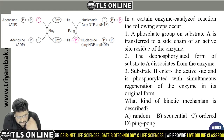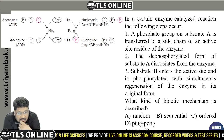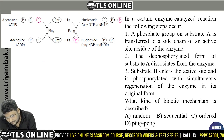Look at this question: in a certain enzyme-catalyzed reaction, the following steps occur — a phosphate group from substrate A is transferred to the side chain of the enzyme. The phosphorylated form then dissociates, substrate B enters the active site, and the phosphorylated group is simultaneously transferred to B, regenerating the original form of the enzyme.